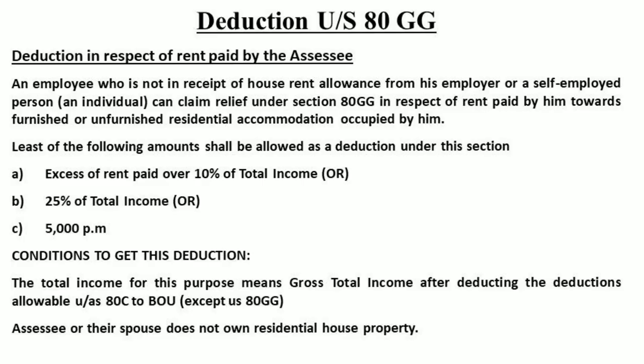Under Section 80GG, this is a very valuable deduction in respect of rent paid by the assessee — an employee who is not in receipt of house rent allowance from his employer, or a self-employed person, an individual. One can claim relief under Section 80GG in respect of rent paid towards furnished or unfurnished residential accommodation occupied by him.